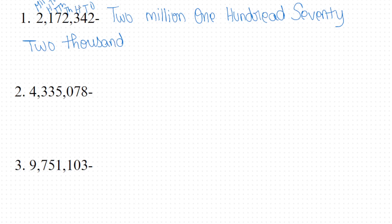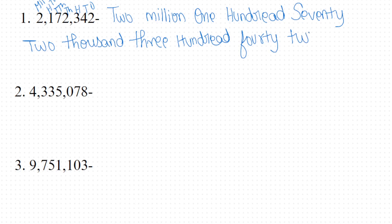Then three is in the place of hundreds, so three hundred. Four and two are in the places of tens and ones respectively, so we write forty-two. As the last part of the number name, we write three hundred forty-two. I think you are able to understand.